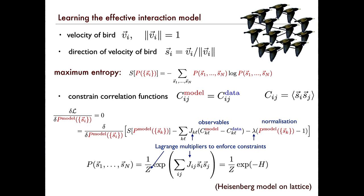The Lagrange multipliers get translated into parameters — one for the normalization and one that keeps intact the correlations. You have a form which basically tells you that the direction of one bird is tied to the direction of another bird through an interaction matrix J_ij. Since these are continuous variables — actual directions of velocity, arrows that can go in different directions on the circle — this is equivalent to a Heisenberg model on the lattice. But the lattice is now given to us by the data, so it's a bird network lattice.